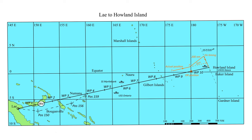So they probably did not make an offset approach. All the time they were expecting a homing signal from Itasca. Their best option was a direct approach, but that would then require searching both north and south on the Howland sun line.